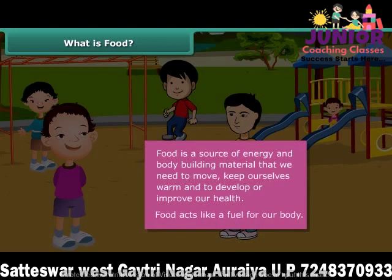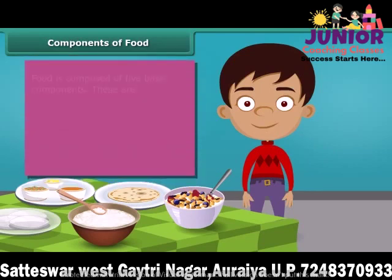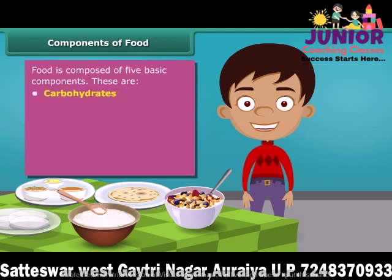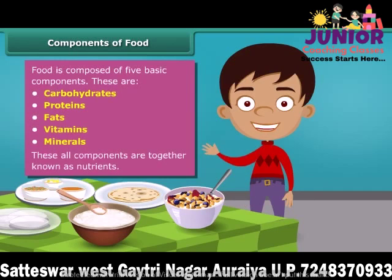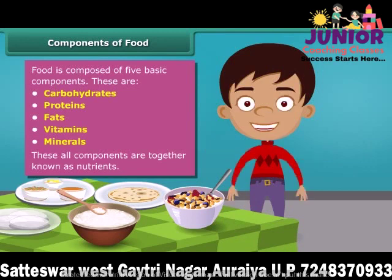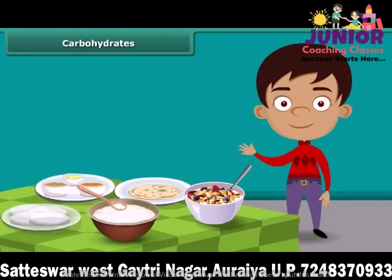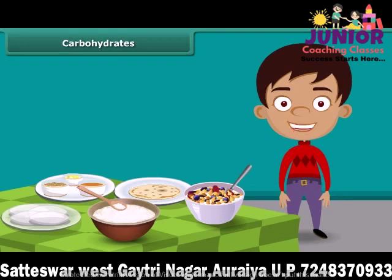Thus, food acts like a fuel to our body and we cannot survive for long without it. Now, a question may arise: how do we get energy by eating food and why is food known as fuel for our body? Friends, food has five basic components in it. These are carbohydrates, proteins, fats, vitamins, and minerals. All these components together are called nutrients. A body digests food and absorbs these nutrients to provide energy. Some nutrients help us fight against diseases. Each food item contains all nutrients in different amounts and each nutrient plays a different role in the body. Let us know about these nutrients one by one in detail.